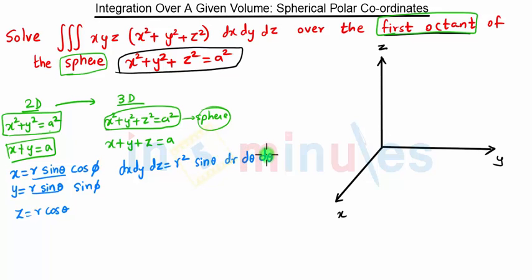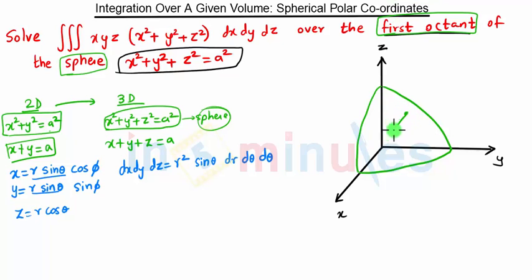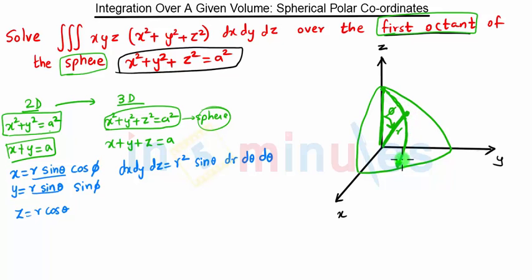Now we find the limits of integration. The first octant means we are in the positive side of the x, y, and z axes. Considering a point in spherical polar coordinates, we look at a strip and move it. The angle φ is measured in the xy-plane, and for the first octant φ goes from 0.